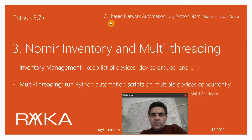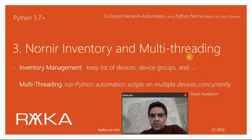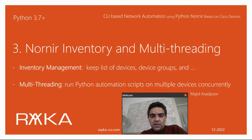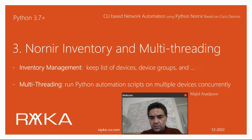Welcome to another video on CLI-based network automation using Python Nornir based on Cisco devices. In this section, we are going to talk about two specific Python Nornir library features: Inventory Management and Multi-Threading. With Inventory Management, you can keep a list of devices, device groups, and their properties inside inventory files rather than configured inside the Python automation script itself. Multi-Threading gives the capability to run a Python automation script on multiple devices at the same time concurrently.